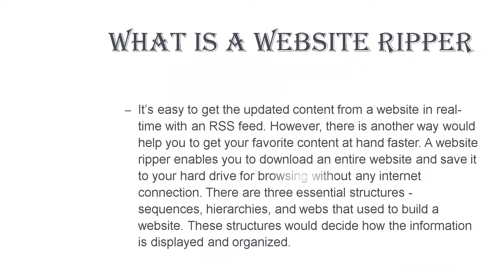It's easy to get updated content from a website in real time with an RSS feed. However, there is another way that would help you get your favorite content at hand faster. A website ripper enables you to download an entire website and save it to your hard drive for browsing without any internet connection. There are three essential structures — sequences, hierarchies, and webs — used to build a website. These structures decide how information is displayed and organized. I will show you four best website ripper software in 2020.